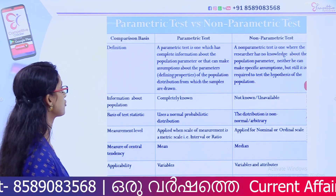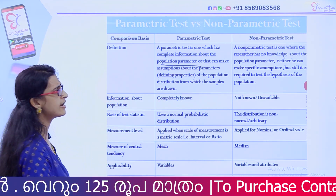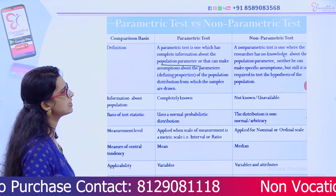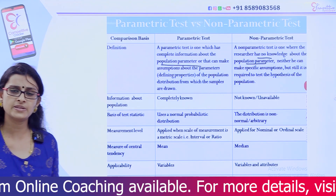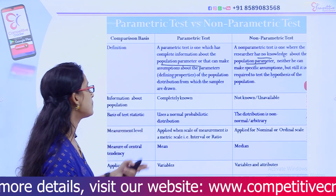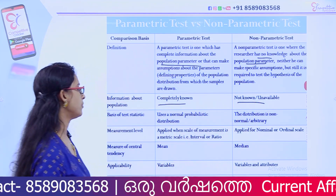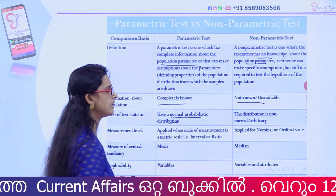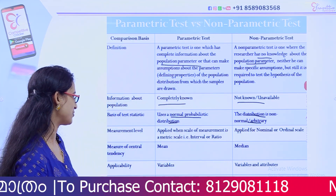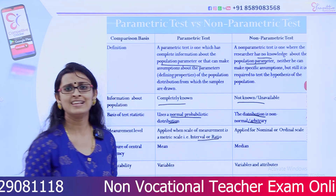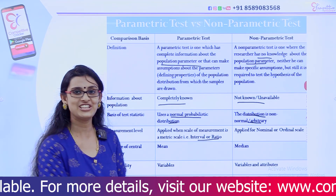In research, there are parametric tests and non-parametric tests. When complete information about a population is available, we use a parametric test. Parametric tests assume normal distribution and use interval or ratio scales. Non-parametric tests are used when such complete information is not available.